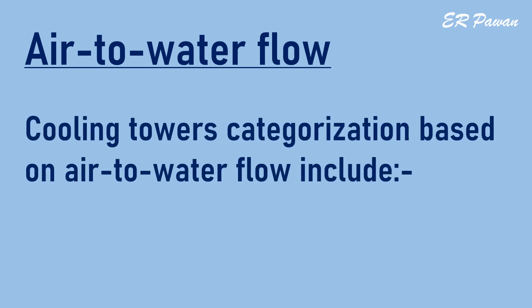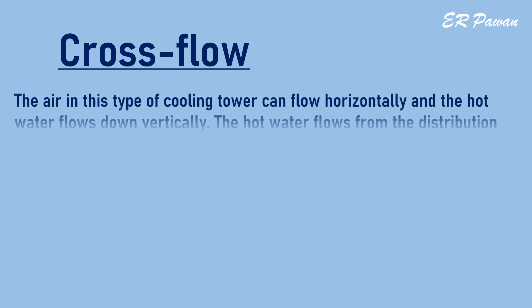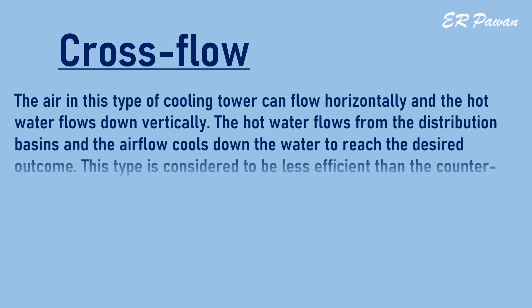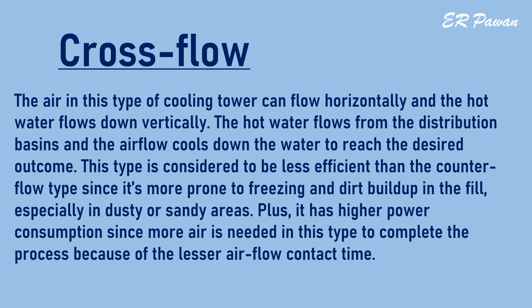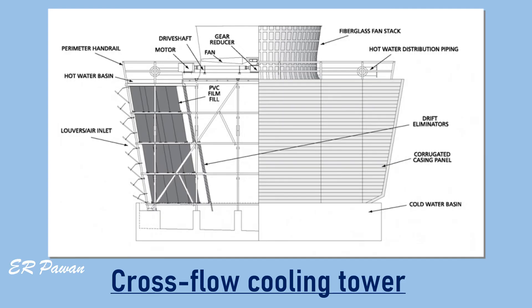Air-to-water flow categorization includes cross flow and counter flow. Cross flow: in this type, the air flows horizontally and the hot water flows down vertically from distribution basins, and the airflow cools the water to reach the desired outcome. Cross flow is considered less efficient than counter flow since it is more prone to freezing and dirt buildup in the fill, especially in dusty or sandy areas. It also has higher power consumption since more air is needed due to the lesser airflow contact time.